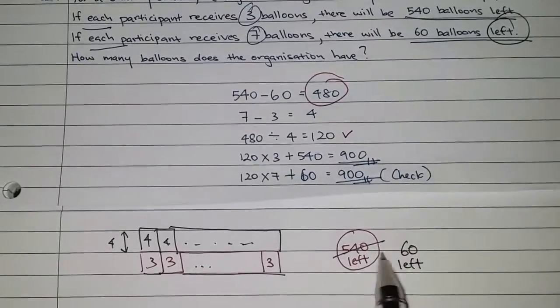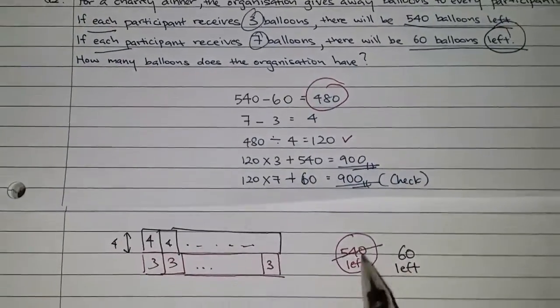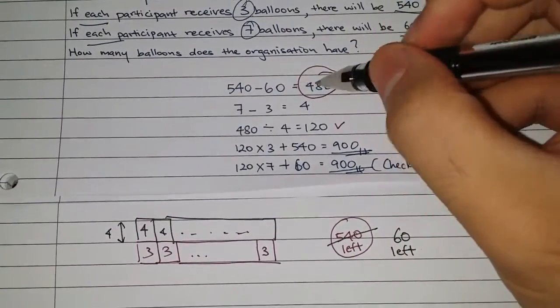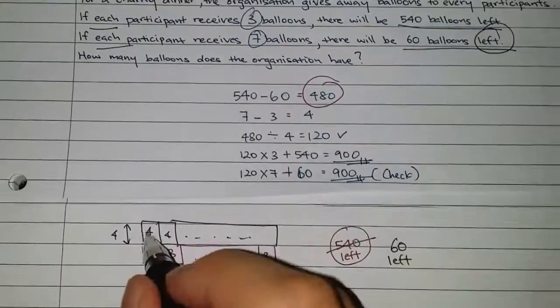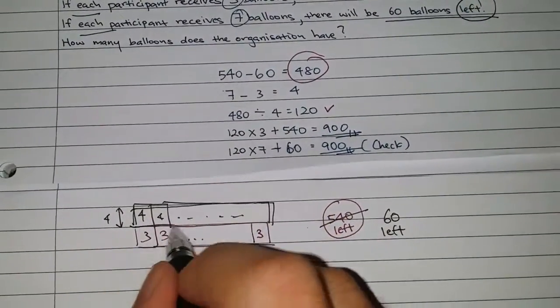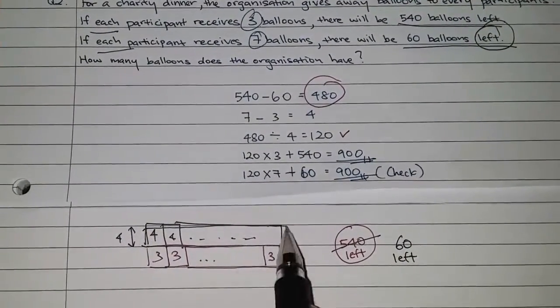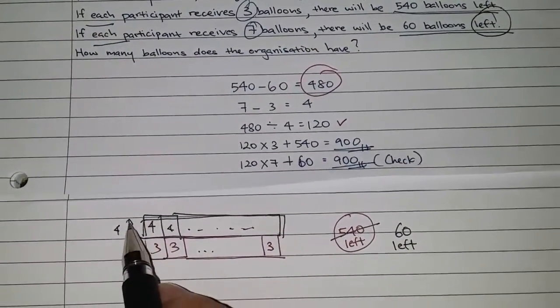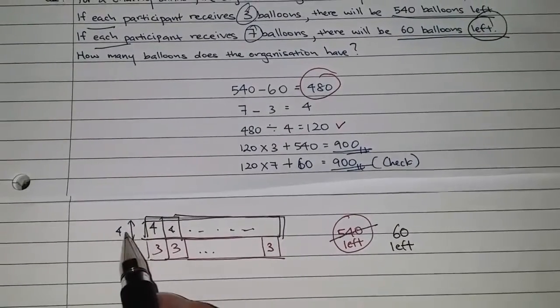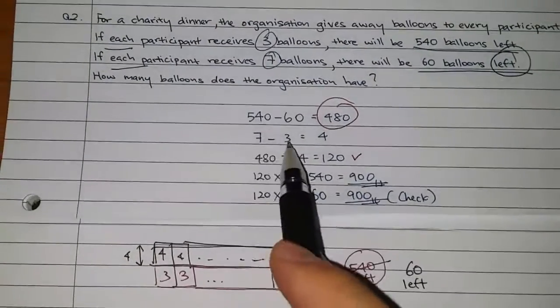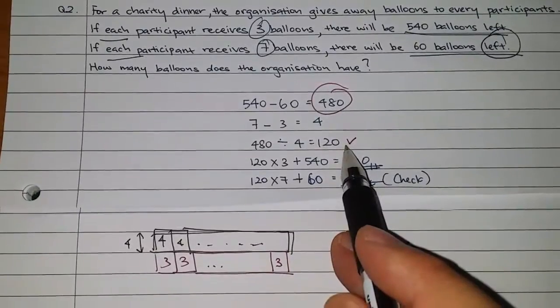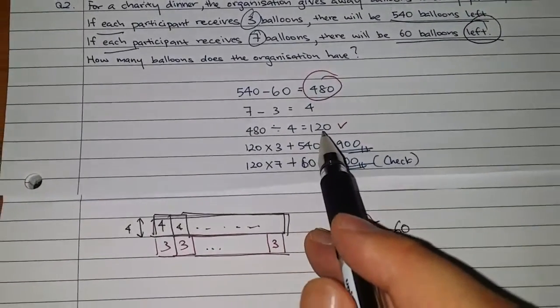Now, 540 to 60, which means that if I take 540 minus 60, this 480 comes here. So in this case, we understand that 480 balloons enter this black box here. So for a total of 480 for 4 each, that's why we take 480 divided by 4, I get 120. So there are 120 participants.